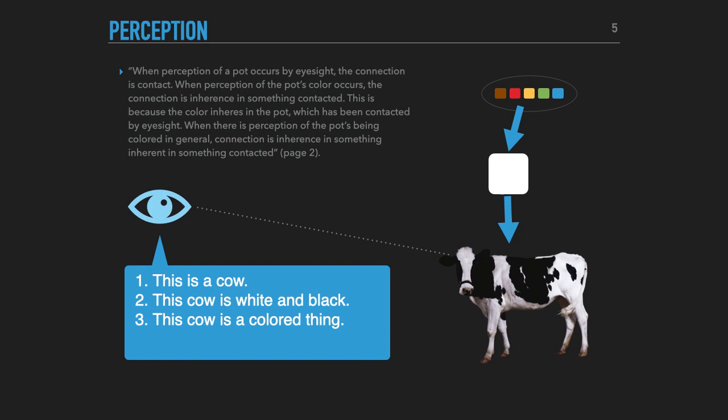So the white color inheres in Bessie, which has been contacted by my eyesight. But then I can say, oh, wait, Bessie is a colored thing in general. And that's because in the white property, in those white bits, in the white quality, there is colored in general, colored nature. White is a color. So more generally than just that particular bit of white, there is being colored. And that appears in color. And because there's that in the white bit, which is in Bessie, when I see Bessie, I can also know through perception that Bessie the cow is a colored thing.